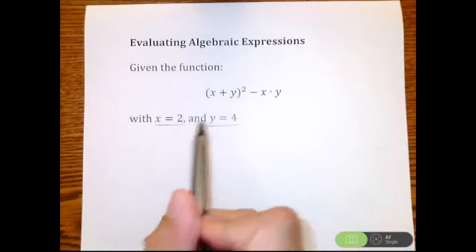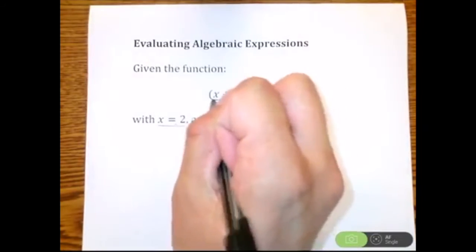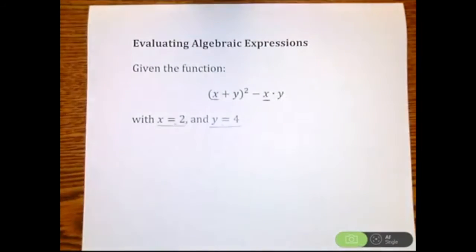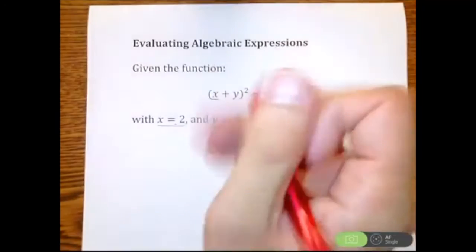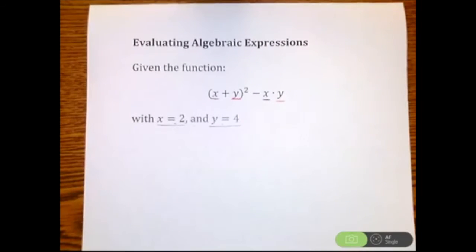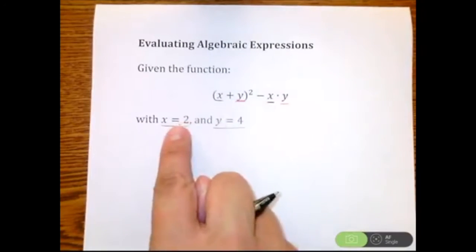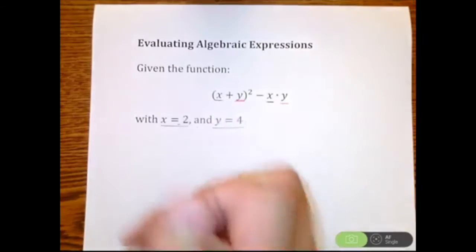So what we should do is, if we know this information, we should plug it in. So we're going to replace all x's with a 2, and anytime we see a y, we're going to replace that with a 4. So let's go ahead and do that. So we'd have, rewriting, I'm going to rewrite this equation. Anytime I see an x, let's put a 2. Anytime I see a y, let's put a 4.